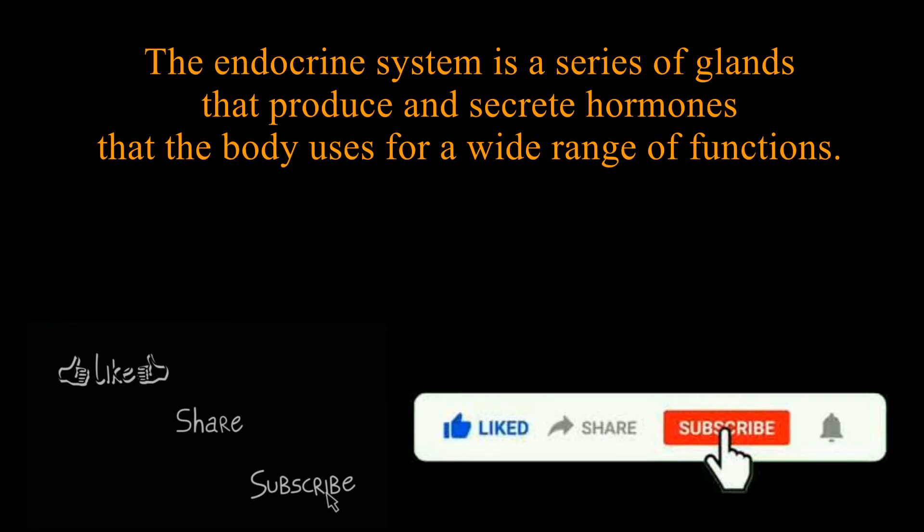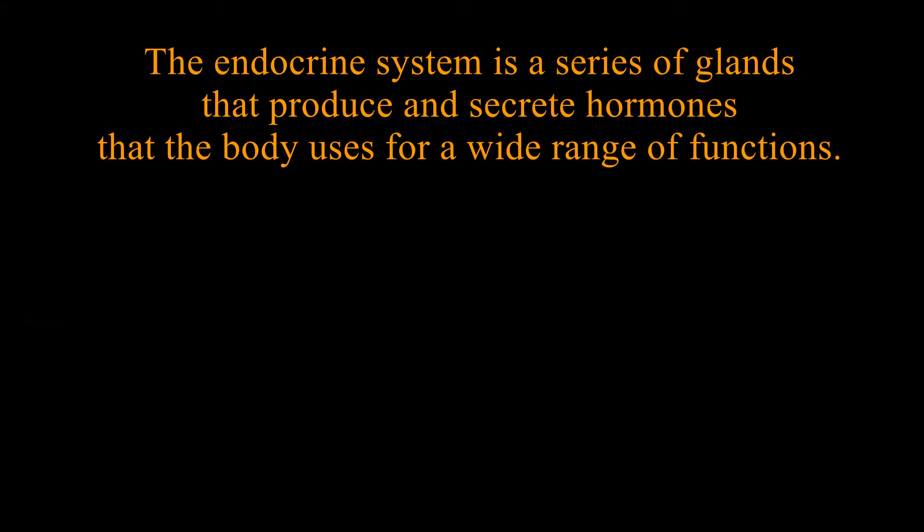The endocrine system is a series of glands that produce and secrete hormones that the body uses for a wide range of functions. The endocrine system works with the nervous system to provide homeostasis and balance in the internal environment of the body.